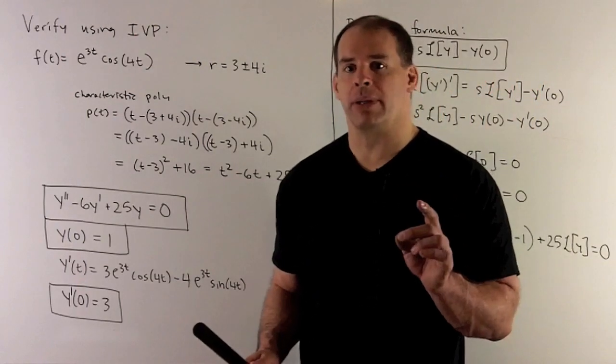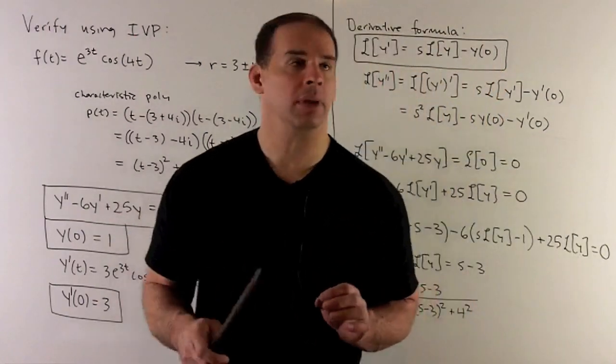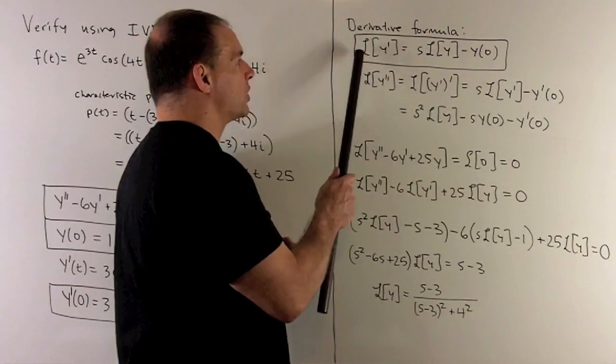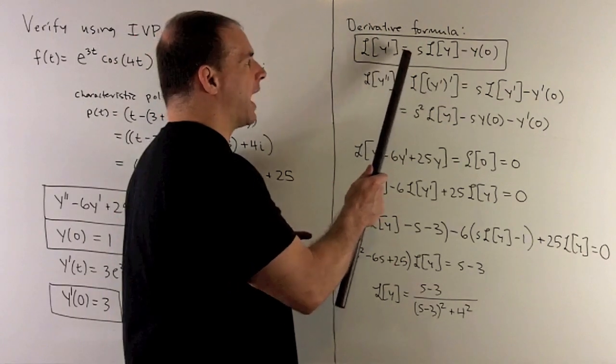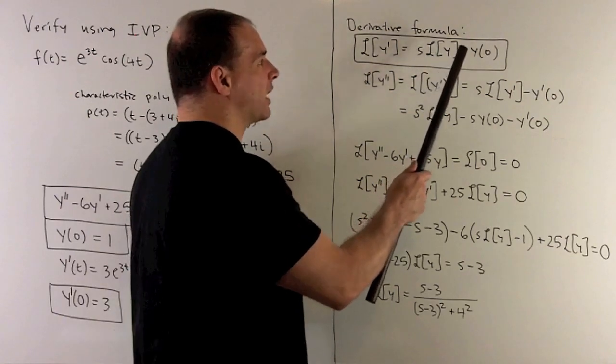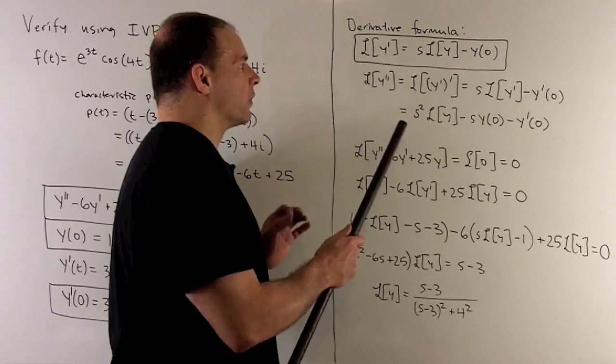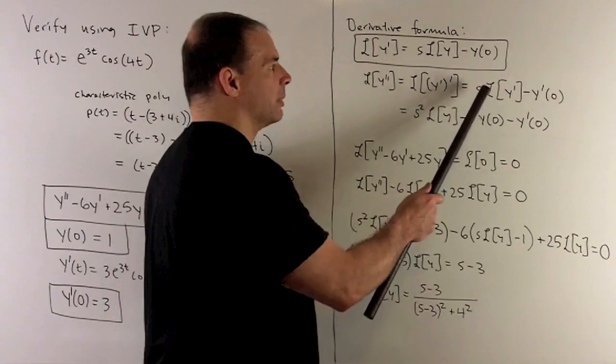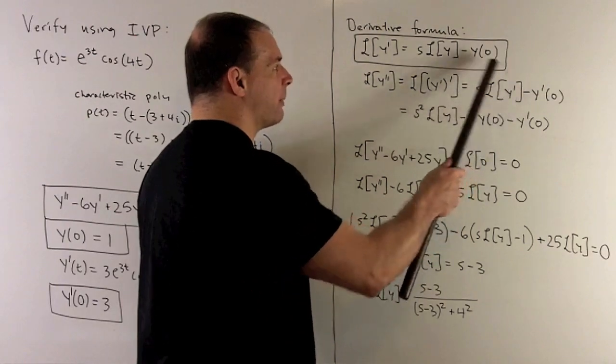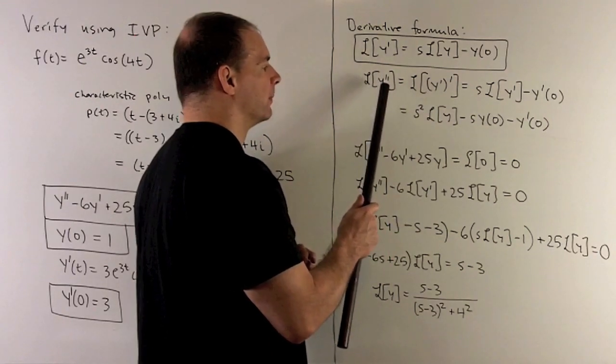Let's apply our derivative formula for the Laplace transform to our ODE and see what comes out. The derivative formula says if you take the Laplace transform of a derivative, it equals s times the Laplace transform of y minus y(0). If we apply that to the second derivative, that's the derivative of the first derivative, giving us s times Laplace transform of the first derivative minus the first derivative at 0. We get this formula for the Laplace transform of the second derivative.